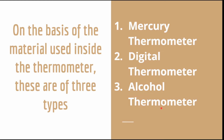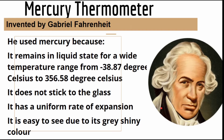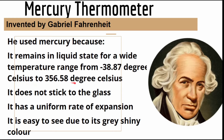Now we will see what a mercury thermometer is. It was invented by Gabriel Harald Fahrenheit. He used mercury inside the thermometer because mercury remains in a liquid state for a wide range of temperatures, ranging from minus 38.87 degrees Celsius to 356.58 degrees Celsius.